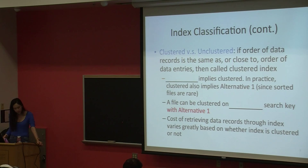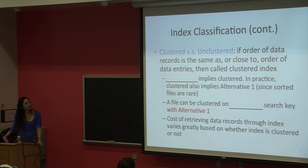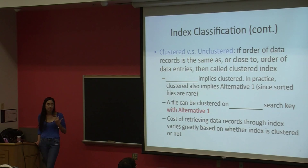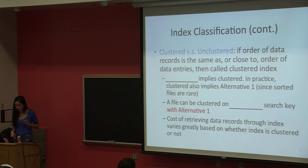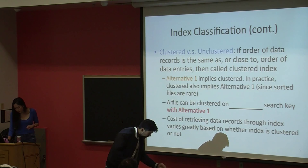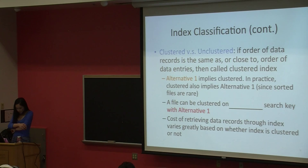Another way of classifying indexing is clustered versus unclustered, which we'll put quite a lot of emphasis on. If the order of data records is the same as or close to the order of data entries, then we call it clustered indexing. You can think of the approaches we talked about for storing data: heap, then sorted, then indexing — each getting more sophisticated. Alternative one implies clustered indexing because in alternative one we sort the data based on whatever attribute we care about.